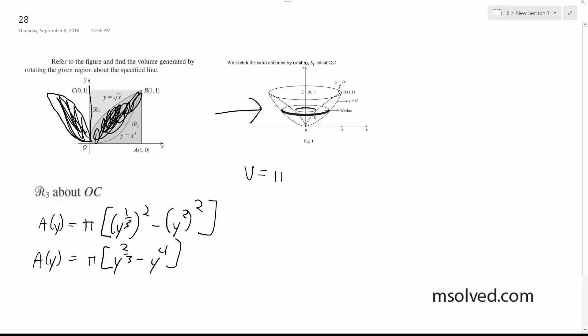The volume is going to be equal to π, the integral from 0 to 1 of (y^(2/3) minus y^4) dy. Volume is equal to π times [3/5 * y^(5/3)] from 0 to 1.